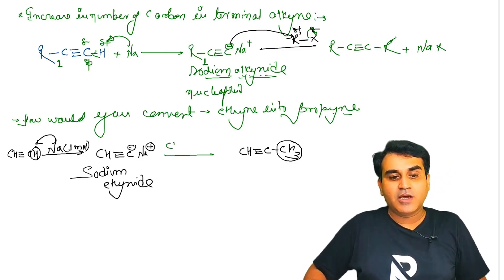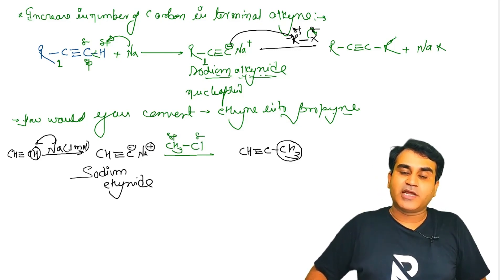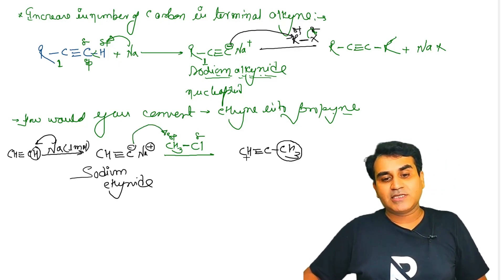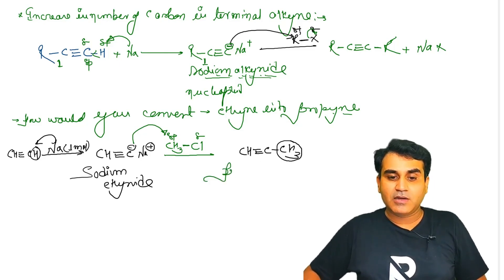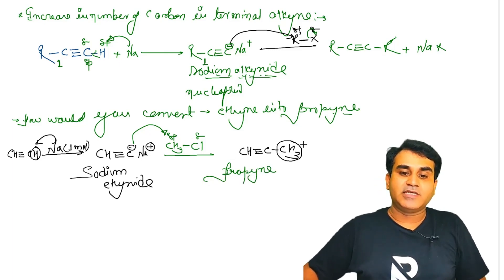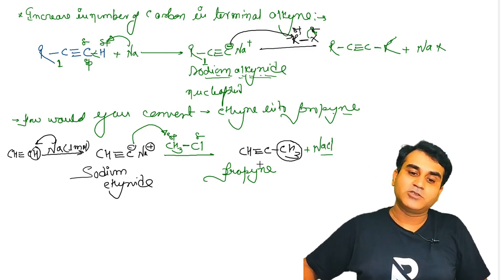Ab humein yahan pe attach karna hai methyl group. Methyl group attach karne ke liye hum use karenge methyl halide. Partial positive, partial negative - to negative aake yahan pe attack karega. Product ban jayega CH₃-C≡CH. Product ban gaya propyne, aur yahan se NaCl by-product mein remove. Understood?